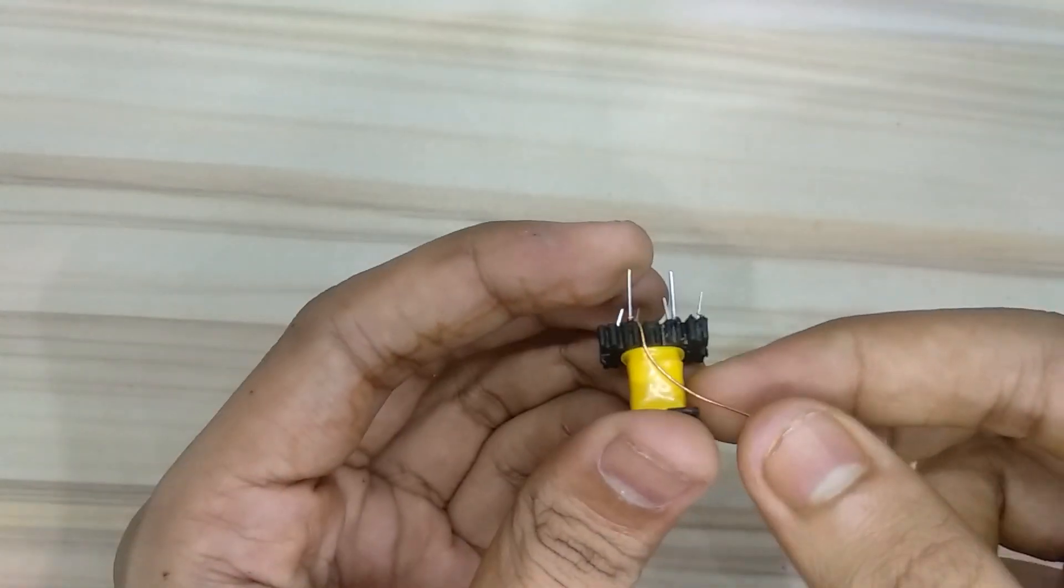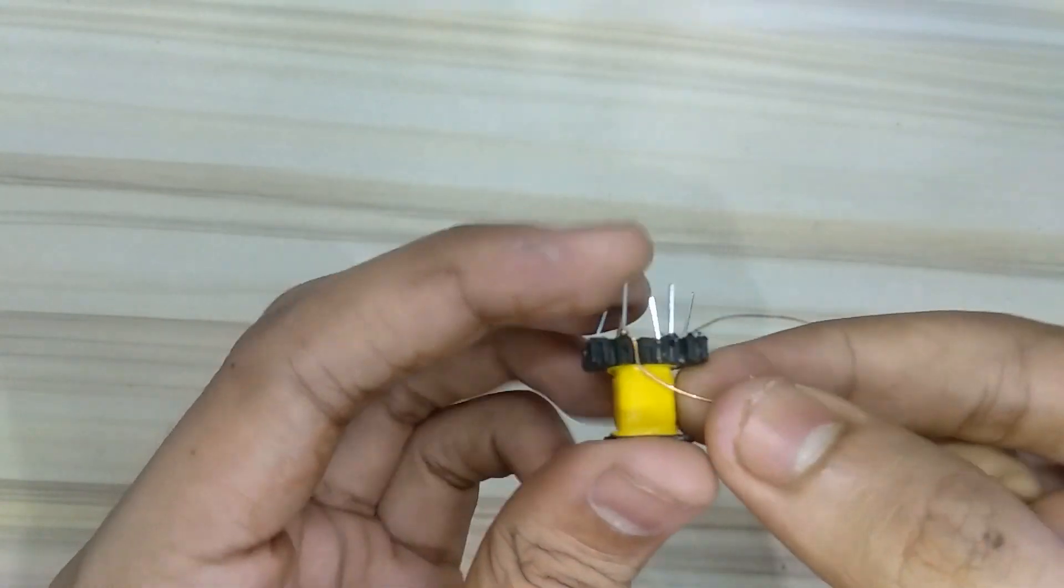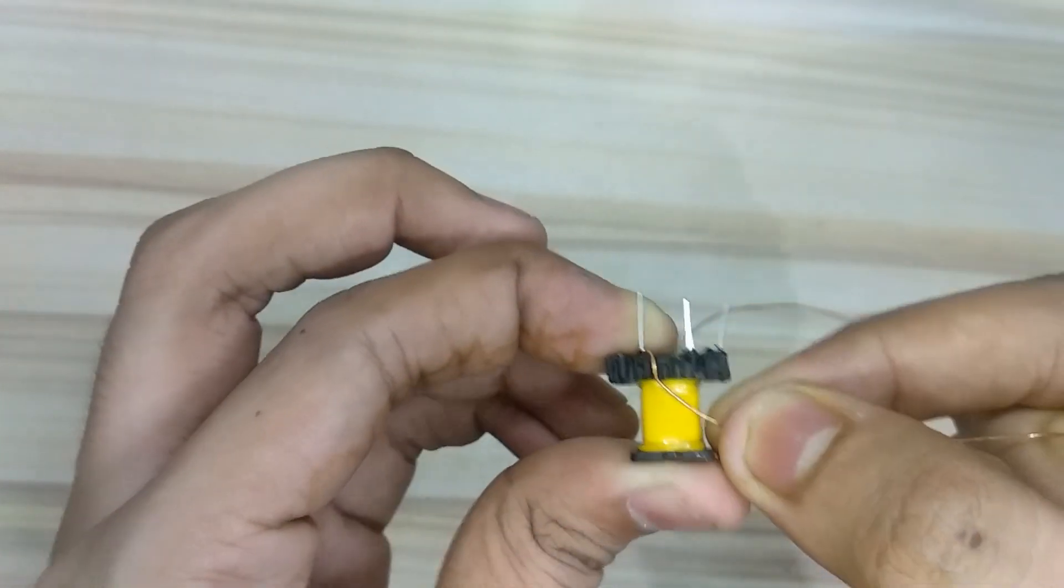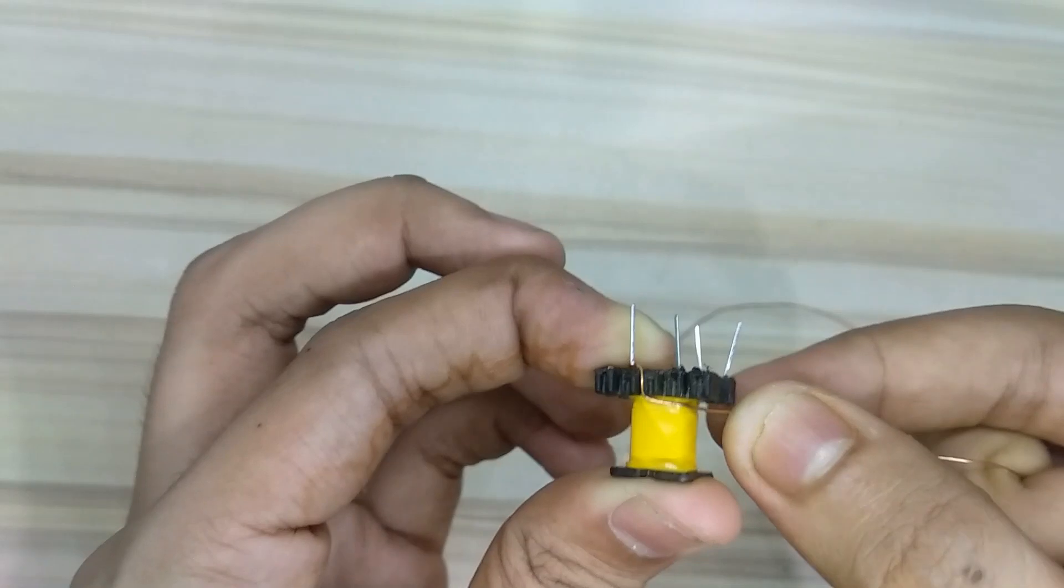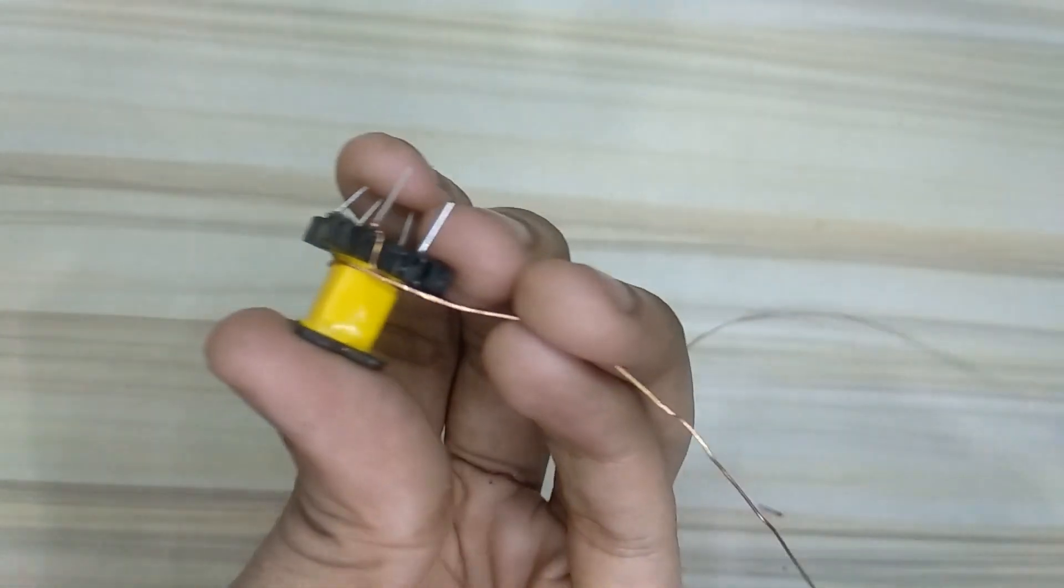Let's wind the secondary. For secondary I am using 0.4 mm wire here, so wind 24 turns for 12 volt, like this. I have winded 24 turns.